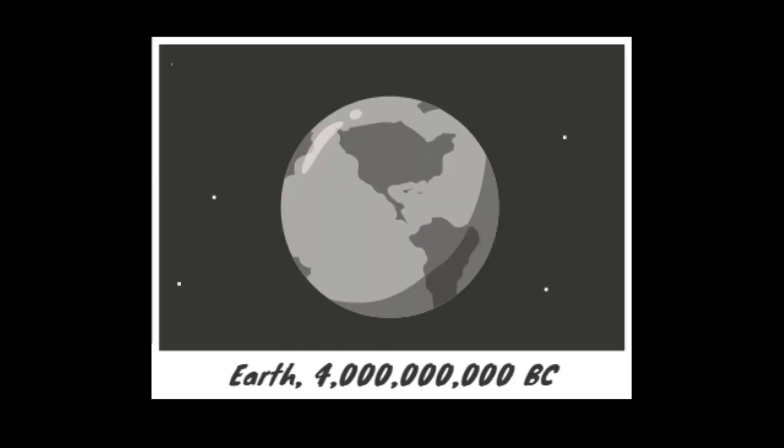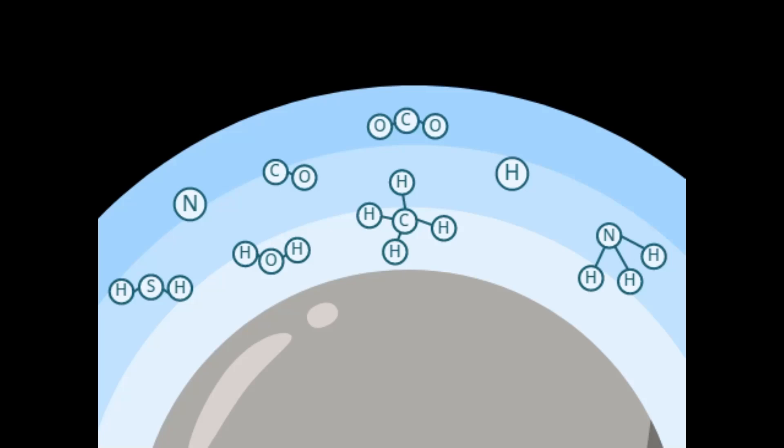When Earth was but a young protoplanet, its atmosphere was made of methane, nitrogen, hydrogen, ammonia, water vapor, hydrogen sulfide, and carbon dioxide. No oxygen in sight.